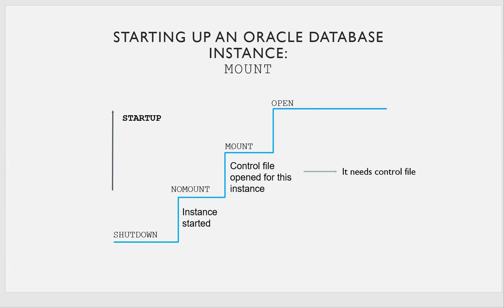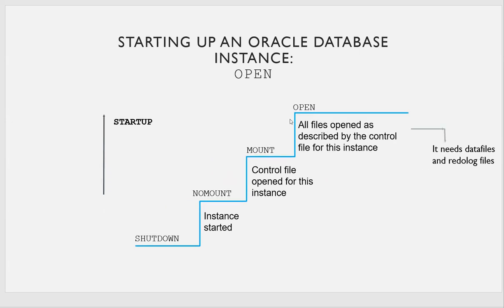From mount to open mode, the database needs all the data files and redo log files — it reads and opens all of them. The instance knows the location of data files and redo log files from the control file. The control file is a binary file — the heart of the database — containing information about data files, redo log files, system change number (SCN), startup sequence, and incarnation. Nobody can read or edit it directly. By reading the control file, the database transitions to open mode.